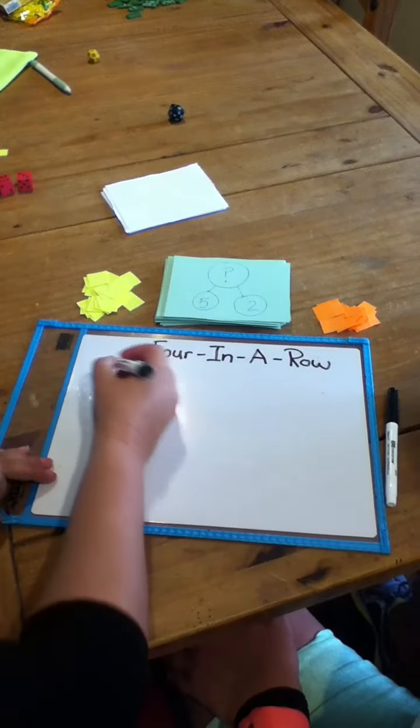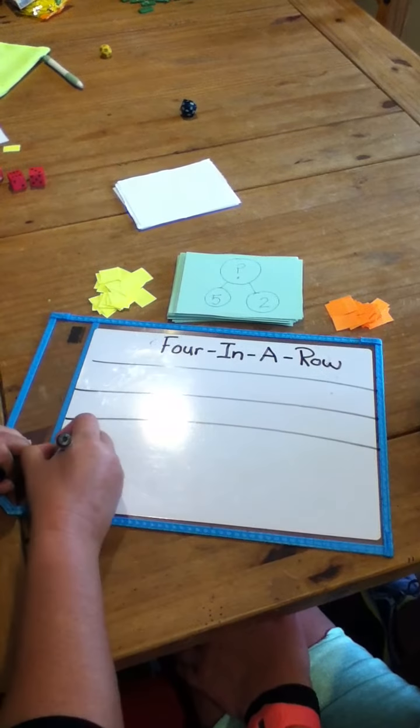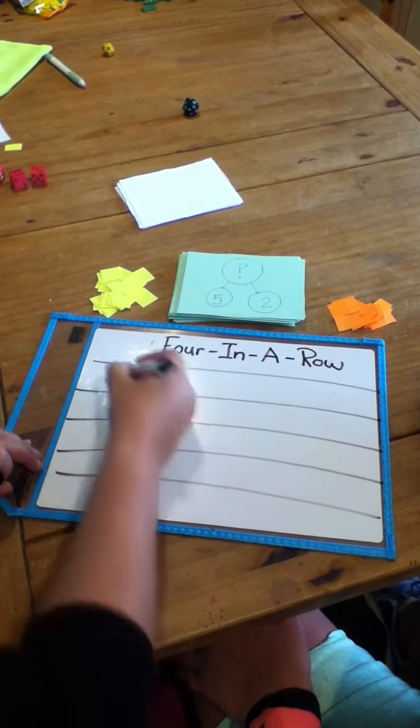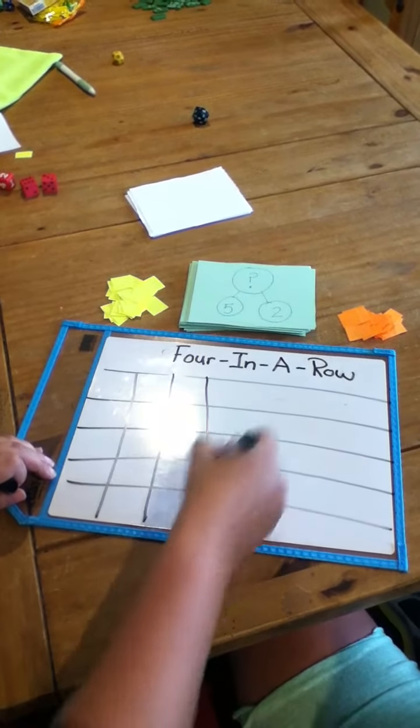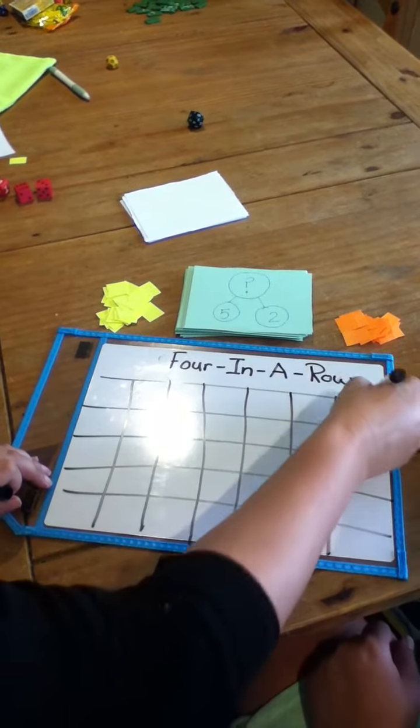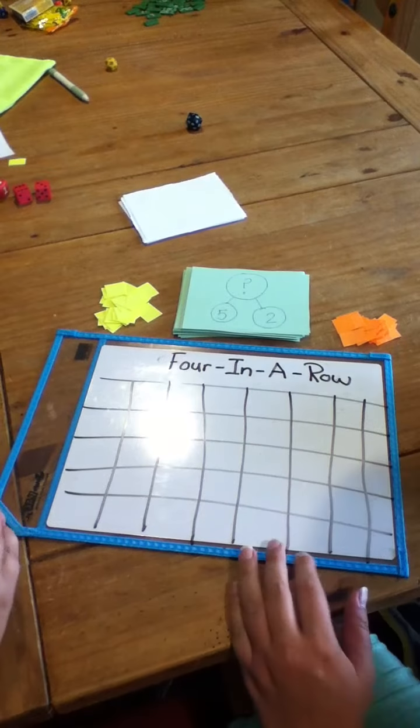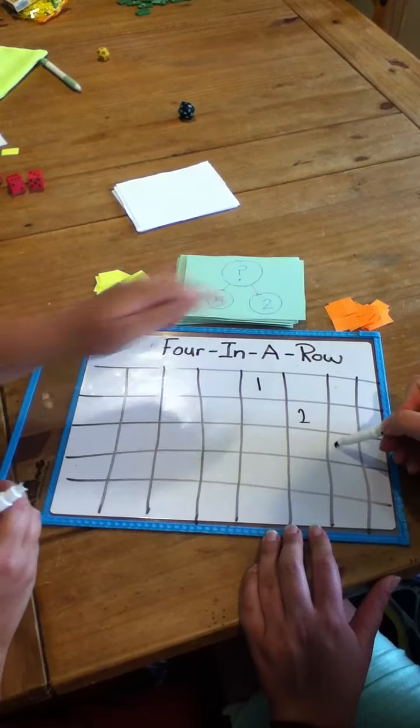So with our paper, what we're going to do is we're just going to quickly make a grid. Now we know that we're going to be dealing with digits from zero to nine. So Ashley's going to start filling in zero to nine on the grid. Again, this is emphasizing whole, part, part.